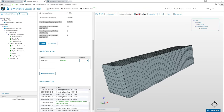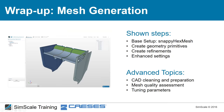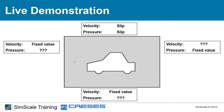Now it's time for simulation setup. The key principle is using your physical knowledge to define boundary conditions. We know the velocity at the inlet — we define it. We don't know the pressure at the inlet. At the outlet, we know the pressure (atmospheric reference), but not the velocity distribution. On the floor, velocity is known — the floor moves at the same speed as the incoming flow because in reality the car moves through still air.